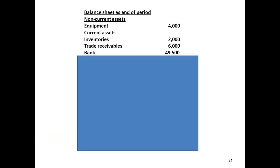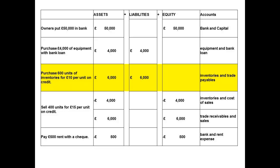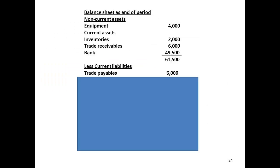This figure is entered onto the balance sheet. My total for assets then becomes £61,500. However, I need to subtract from this any current liabilities that need to be paid in the next period. I have identified one transaction for £6,000, and I enter this figure under trade payables.